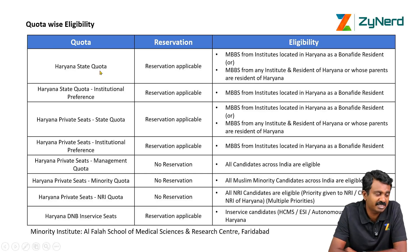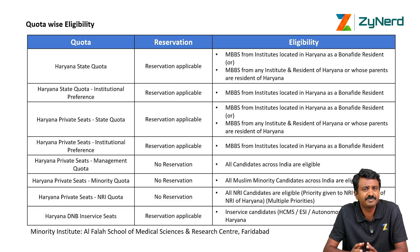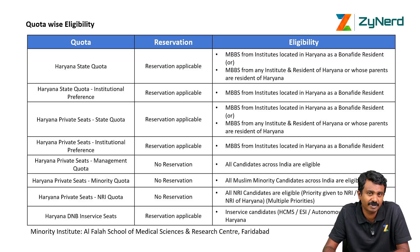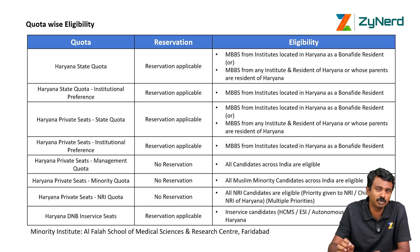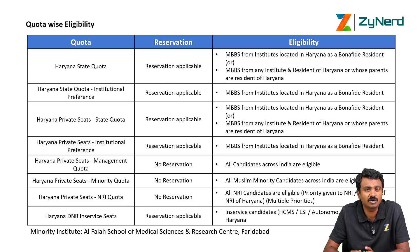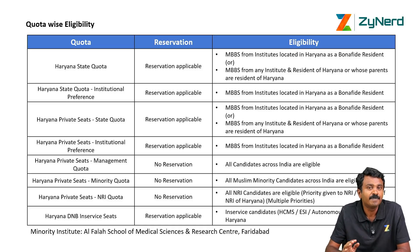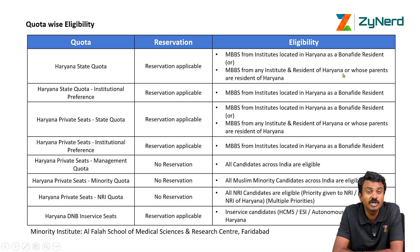Haryana State Quota covers all seats of Haryana government institutes, available for two sets of candidates. First are those who have done MBBS from Haryana — called bona fide residents, which is equivalent to institutional preference. Second are those who have done MBBS from any institute across India, including FMGs, but who are residents of Haryana. This second eligibility is currently under challenge based on a Supreme Court order, but that is the stated eligibility. Even for MDS, they had put up this eligibility.